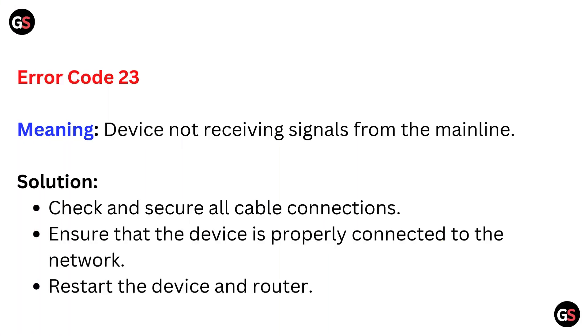Error code 23 meaning: device not receiving signals from the mainline. Solution: Check and secure all cable connections. Ensure that the device is properly connected to the network. Restart the device and router.